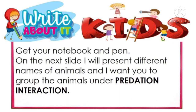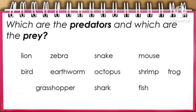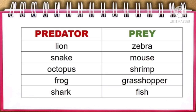To further assess how much you really understand the lesson, get your notebook and pen. On the next slide, I will present different names of animals and I want you to group the animals under predation interaction. Under the predator column, we have lion, snake, octopus, frog, and shark. While under the prey column, we have zebra, mouse, shrimp, grasshopper, and fish.